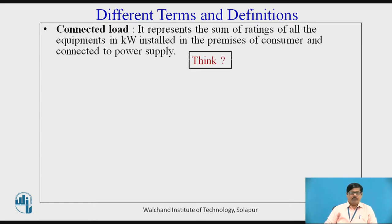There can be a confusion about connected load and load utilized. Consider the example of a house — we have various electrical equipment like lamps, fans, heaters, and other appliances like television, air conditioner, etc. All these loads have definite ratings, and when we add them together, we get the connected load — whether we use them or not is a different issue. Connected load is simply the sum of all ratings of all equipment in kilowatts.